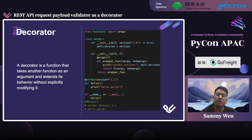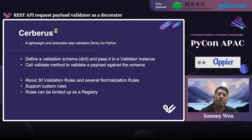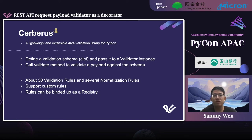Now that we have the structure, how are we going to write the validation rules? We need a data validation library. Here I take Cerberus as the example. It's a lightweight and extensible data validation library for Python. To make the usage much easier, the schema for validating data is not exactly the JSON schema — you should follow the docs and create a Cerberus schema.